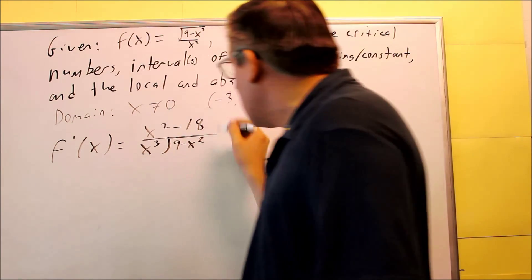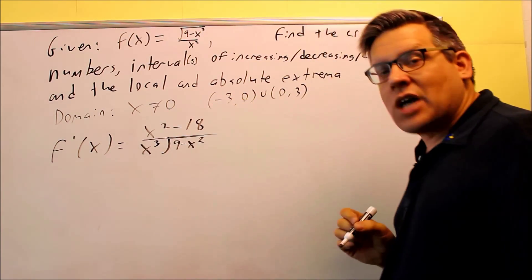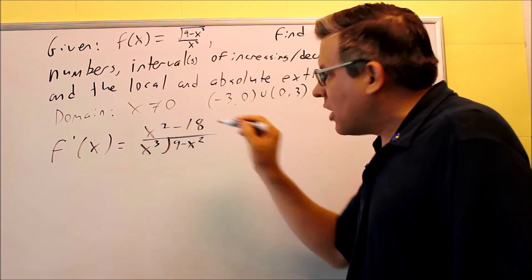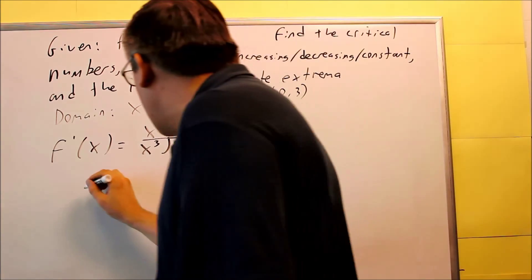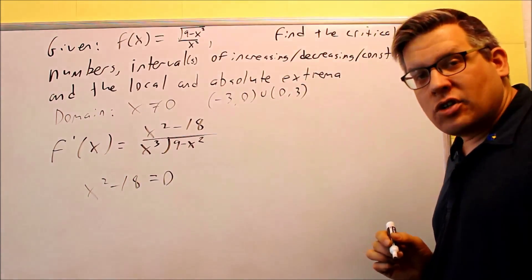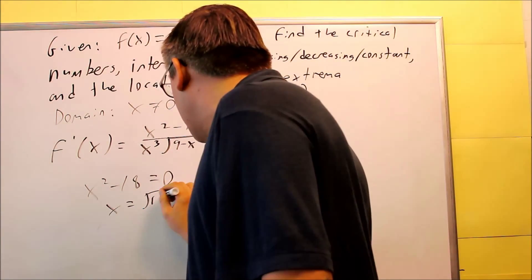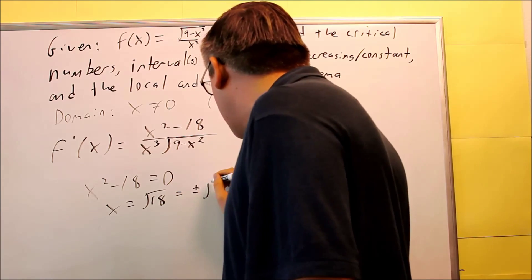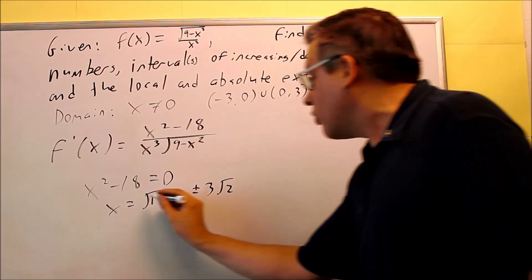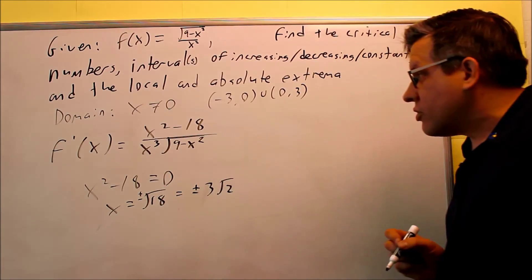But the other way to find a critical number is to set the derivative equal to 0. So in this case, because I have a fraction, whenever you have a fraction, all you're really concerned about is setting the top part equal to 0. Because if I set it equal to 0 and cross-multiply, I'll just end up getting the top equal to 0 anyway. So I have x squared minus 18 is going to be set equal to 0. We're going to solve for that. I get x is equal to the square root of 18, which I can make that plus or minus 3 square root of 2. Don't forget again, when you take the square root, you do get two answers here, plus or minus 3 square root of 2.